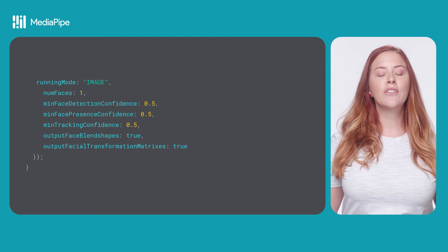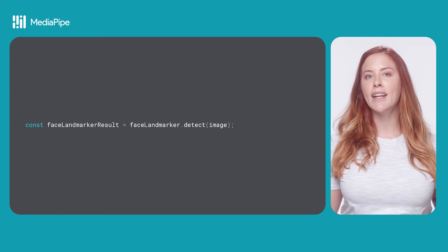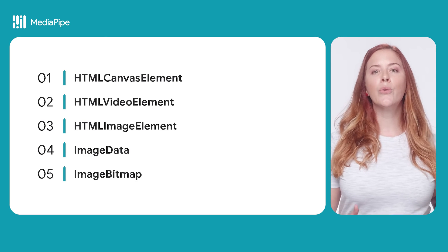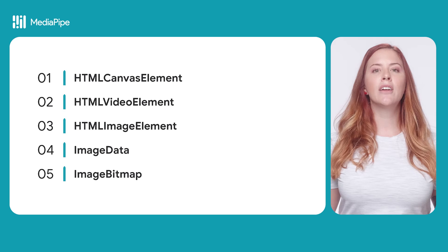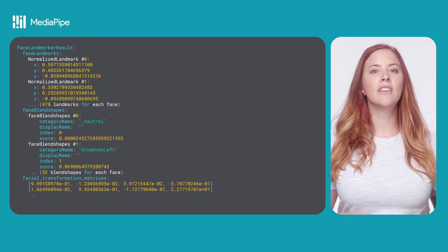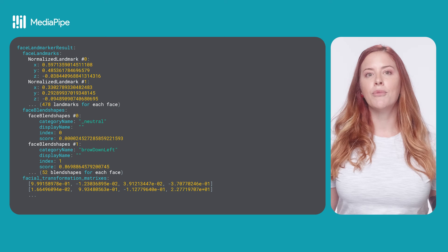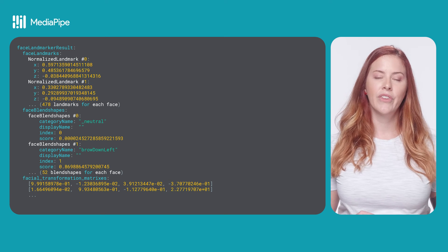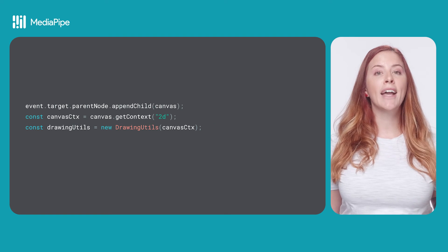To detect facial landmarks on a face in an image, use the FaceLandmarker.detect method, passing the image source. This function is synchronous, which is good to keep in mind when designing your UI. The source can be an HTML canvas element, HTML video element, HTML image element, ImageData, or ImageBitmap. The face landmarker returns a result object for each detection run containing a face mesh for each detected face with coordinates for each face landmark. Optionally, the result object can also contain blend shapes, which denote facial expressions, and a facial transformation matrix. You can access these detection results using FaceLandmarkerResult.faceLandmarks.